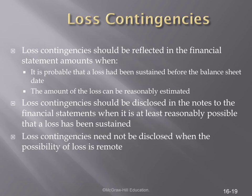Loss contingencies are items that are probable and where we are able to estimate the contingency loss. An example is a pending lawsuit. As part of our audit, we inquire of the client's legal counsel about the status of open litigation. If there is a loss contingency, the financial statements must reflect a liability and corresponding expense. Loss contingencies that are reasonably possible but cannot be estimated should be disclosed in the notes. Loss contingencies need not be disclosed when the possibility of loss is remote.